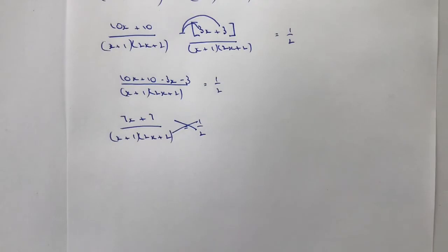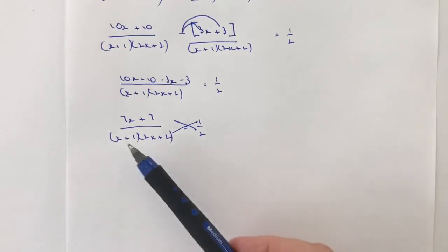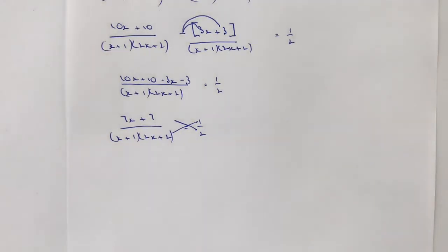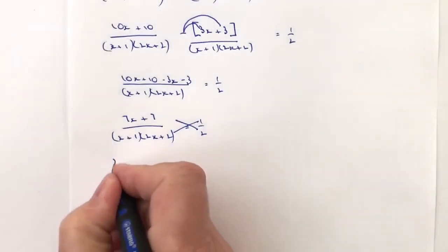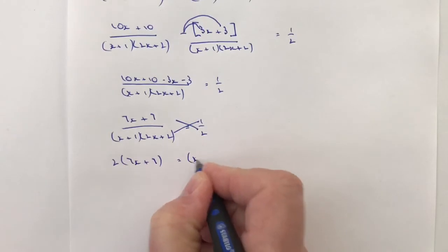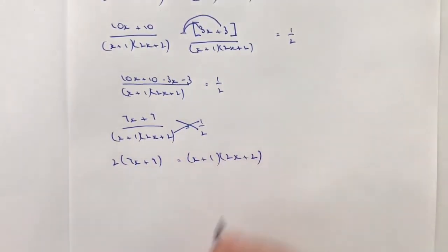So what I could do is I could have multiplied both sides by 2 to get rid of this denominator and then multiply both sides by this to get rid of this denominator, but instead I've chosen just to do it in one go. So what I actually end up with is 2 times 7x plus 7 and that equals x plus 1 multiplied by 2x plus 2.